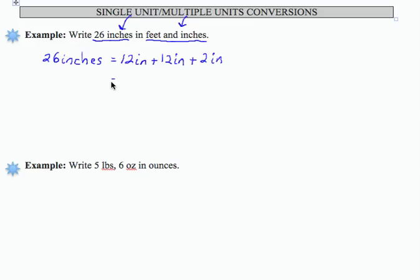But the reason I chose 12 inches is because 12 inches is 1 foot, plus 1 foot, there's another 12 inches, plus 2 inches. Therefore what I have is 2 feet 2 inches. So the single unit, 26 inches, is equivalent to the multiple units, 2 feet 2 inches.